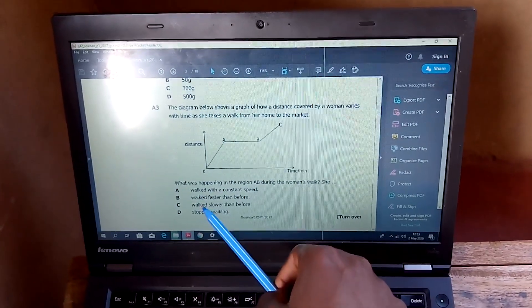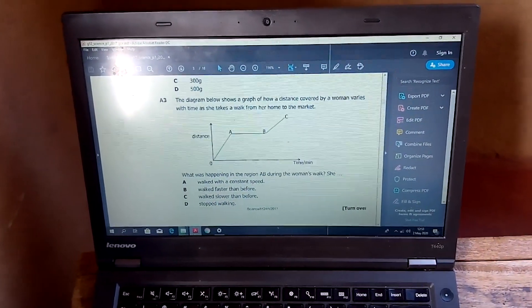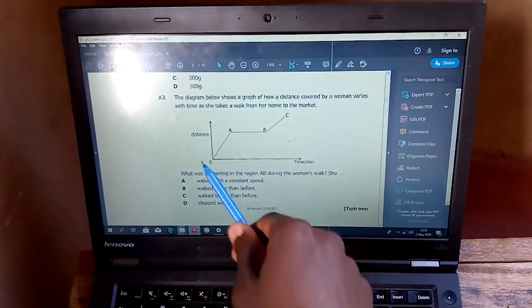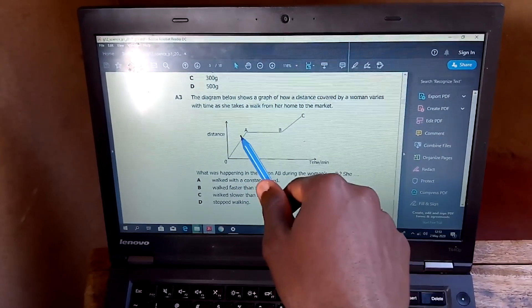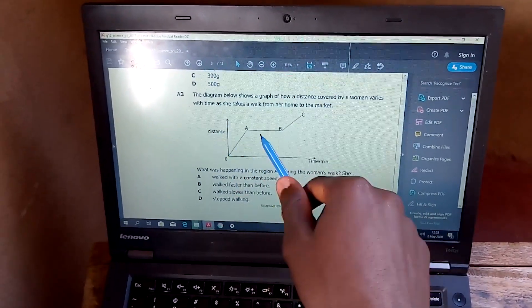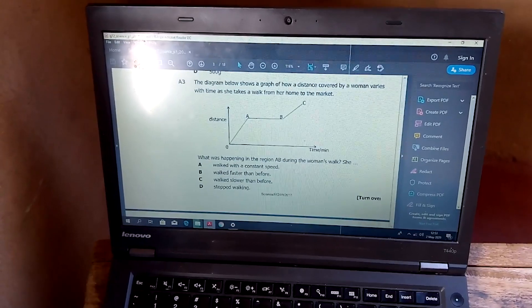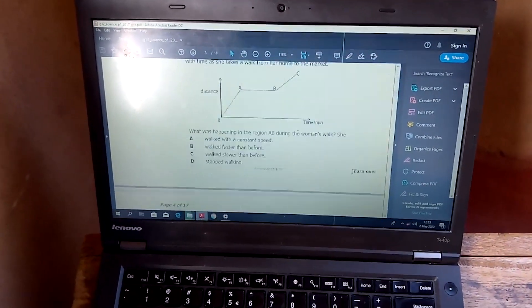Because if we say walked with a constant speed, this is not a speed-time graph where you have to say this is constant speed. This is, the distance is the same here, it's constant. And when the distance is constant, then the person is not moving.